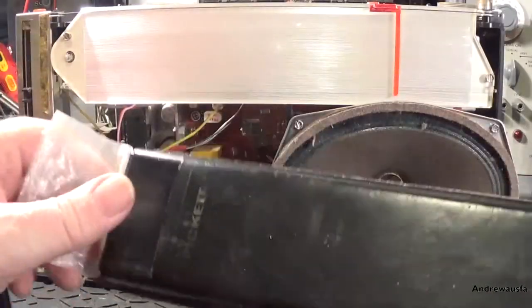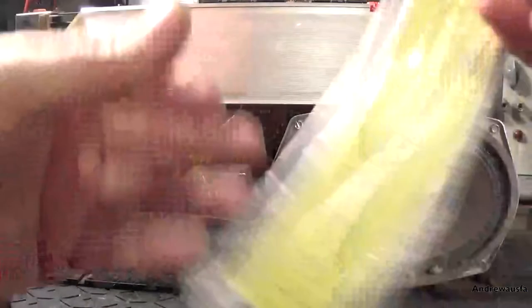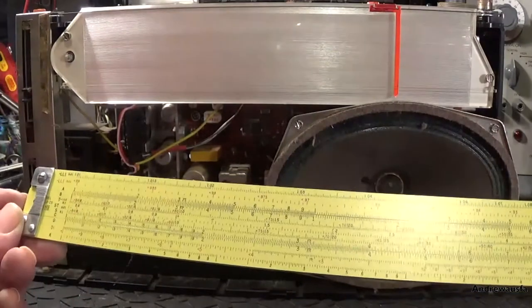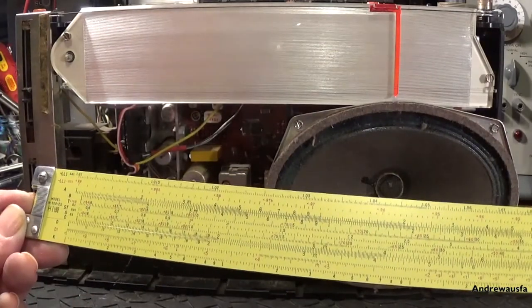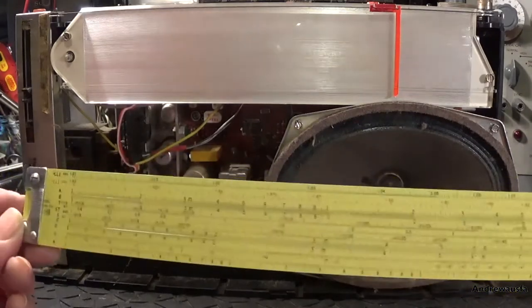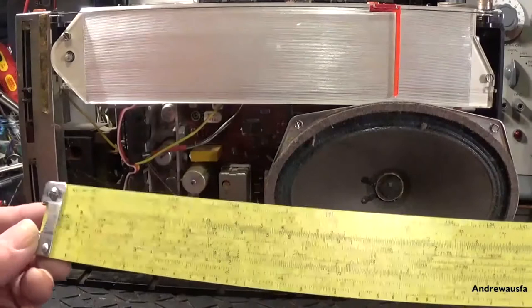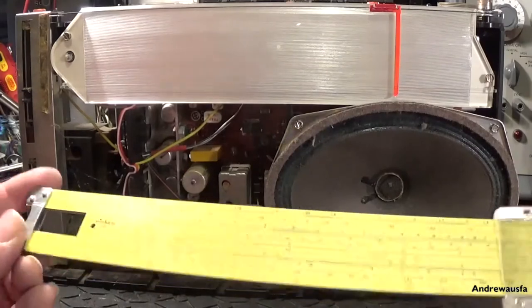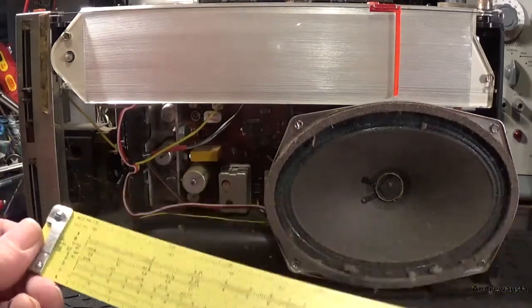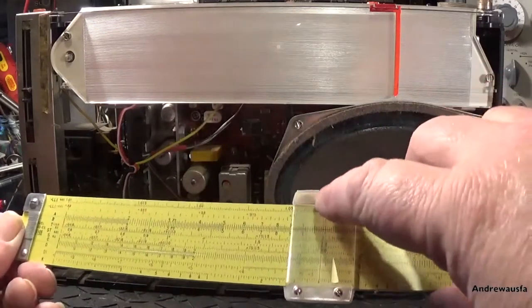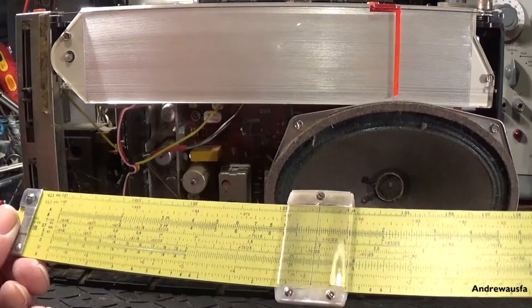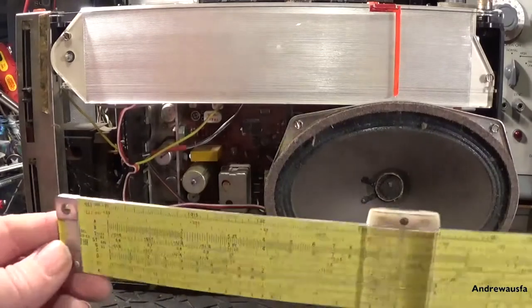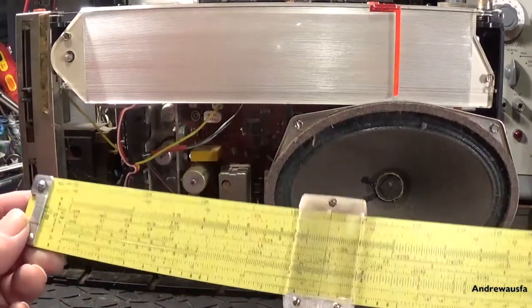This one's an American made Picket. The astronauts in Apollo 11 actually took a Picket, I think it was an N600. These are all metal, made in the US, and this one's a duplex rule, it's printed on both sides. This was in pretty much mint condition. I cleaned it up - the screws had come a bit rusty, so I cleaned them and the aluminum end caps here. That's a nice old rule.